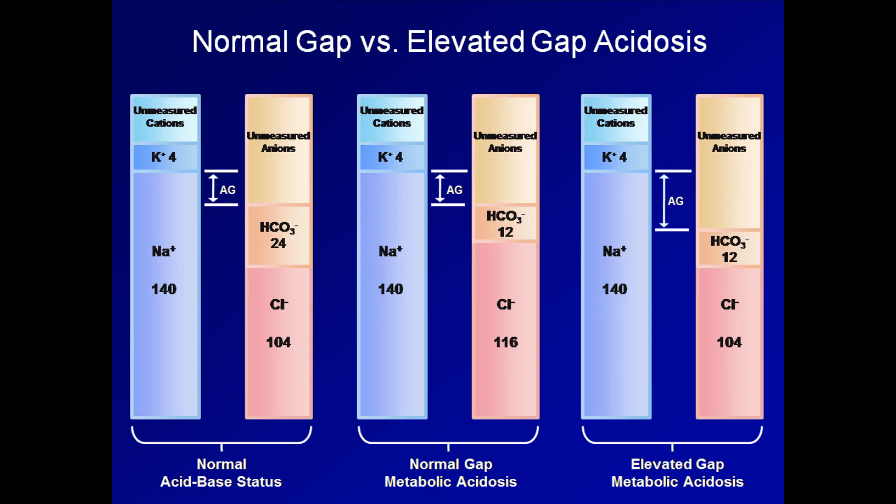The only cause of an elevated gap acidosis not caused by excessive production of a pathologic acid is severe renal failure, in which the kidneys are no longer able to normally excrete phosphate and sulfate, leading to their accumulation in the blood and which contribute to the concentration of unmeasured anions.